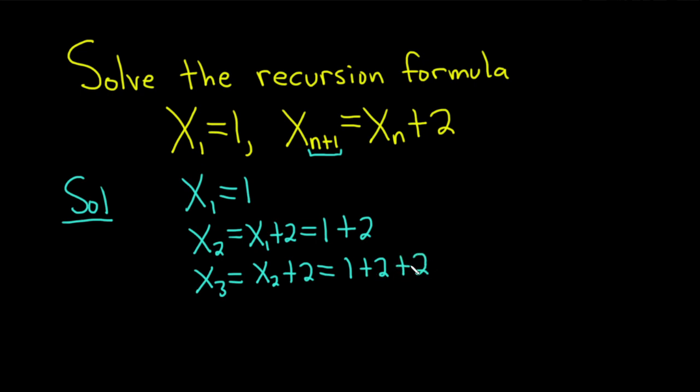So notice we have 2 twos here and we have 1 two here and we have 0 twos here. So already you see a pattern starting to develop and I think that is very key. So I'm going to write this as plus 0 times 2, right? This is plus 1 times 2. I'm going to write this as 1 plus 2 times 2, right? Because 2 plus 2 is 2 times 2. You have 2 twos, right?